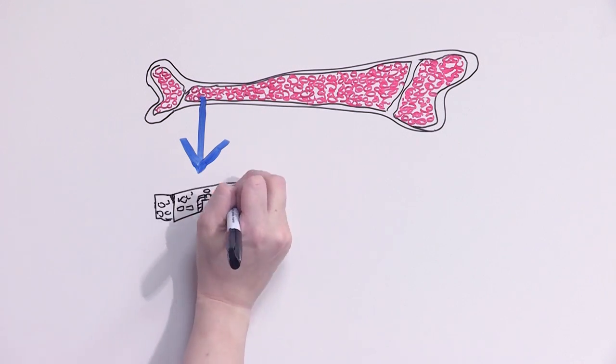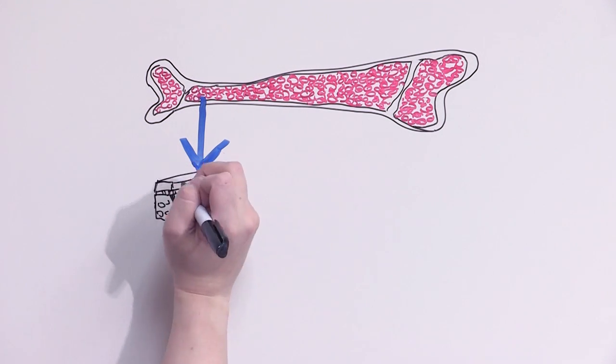Stem cells are factories that sit in the bone marrow and produce the different parts of our blood.